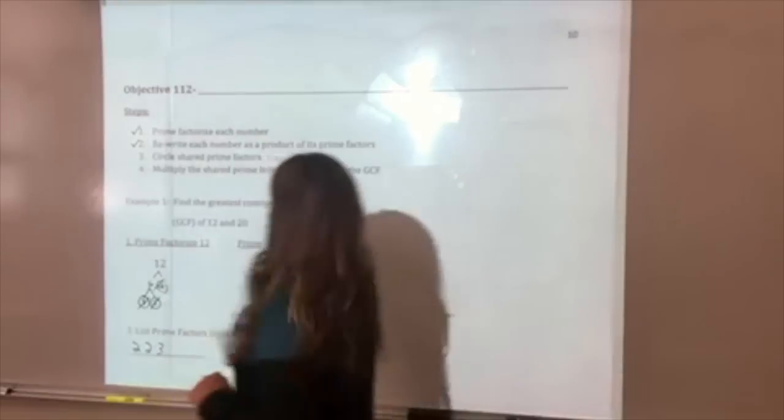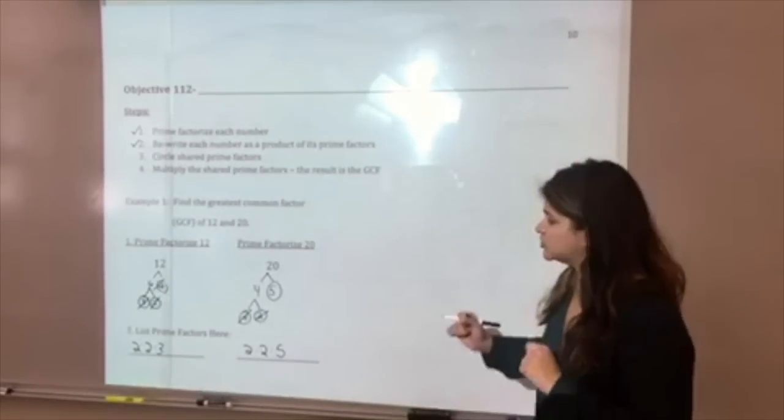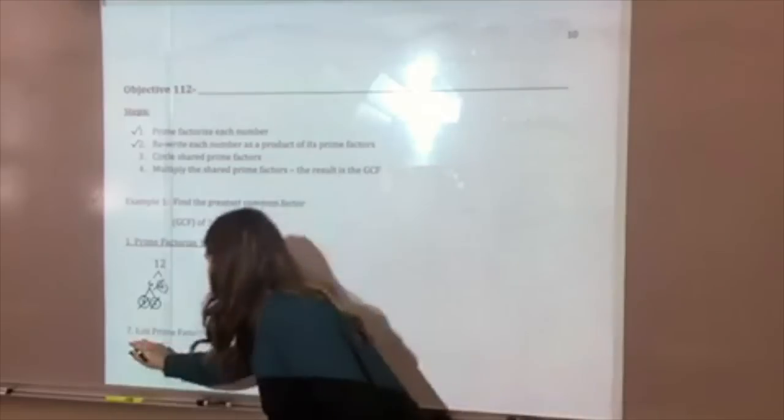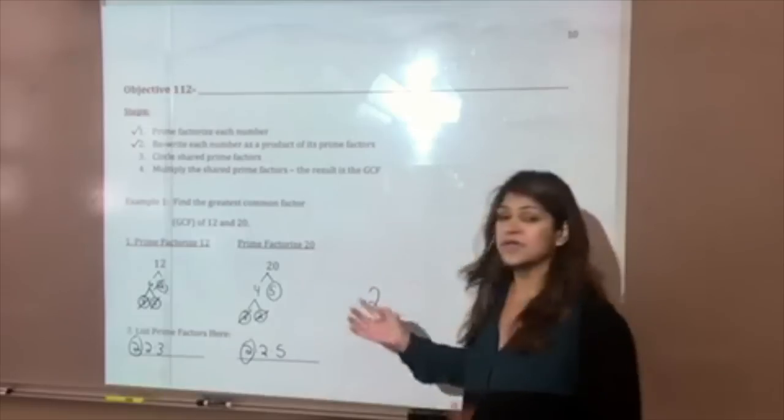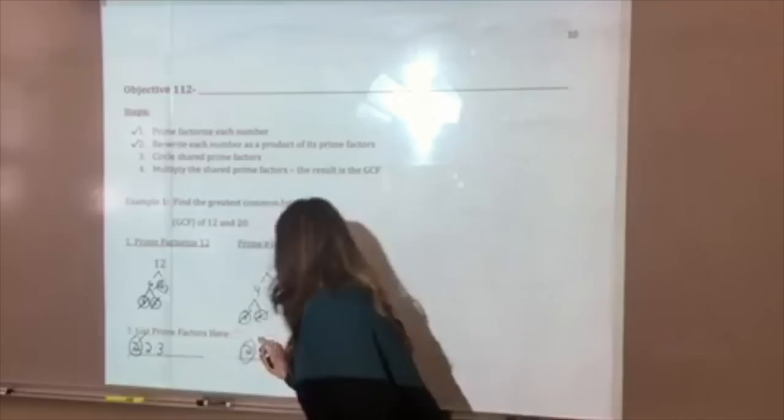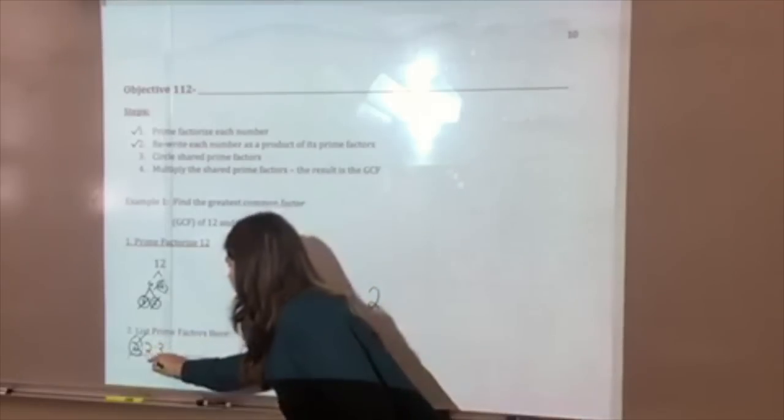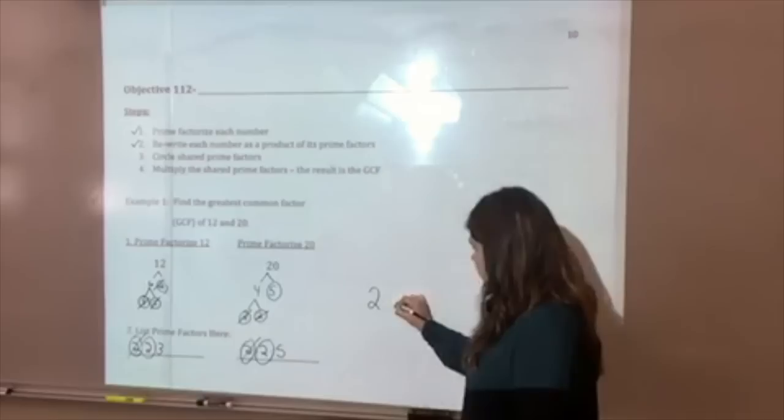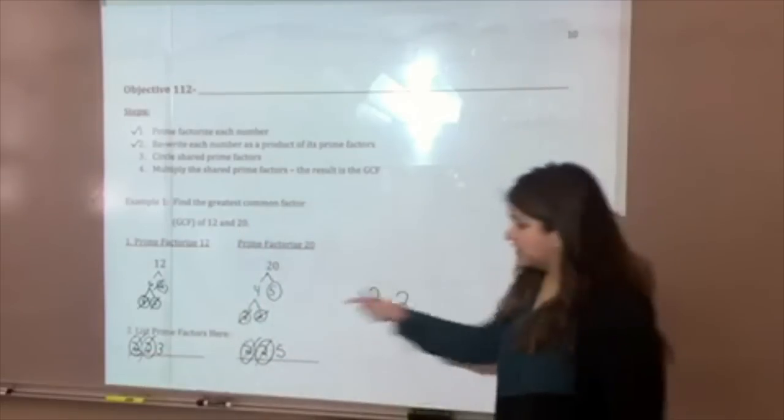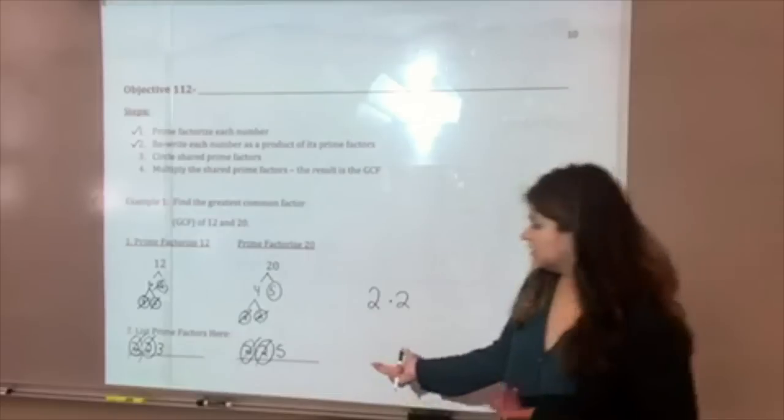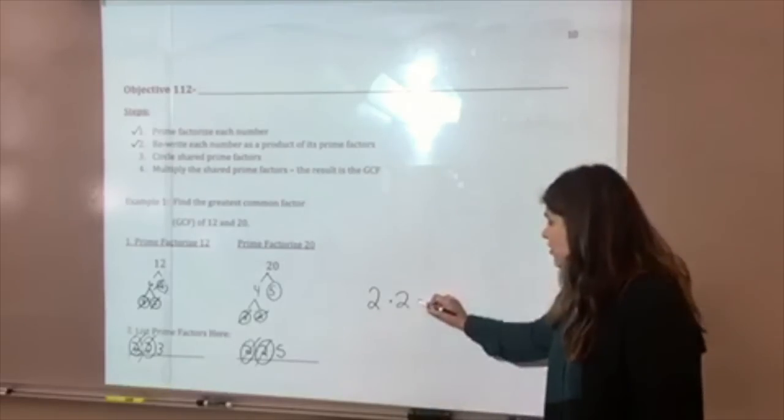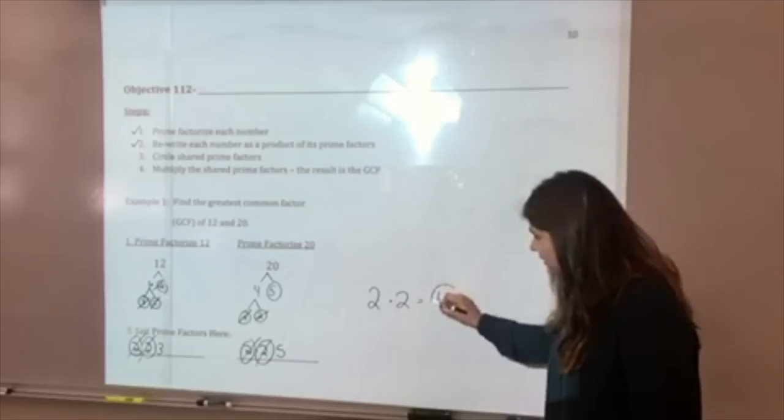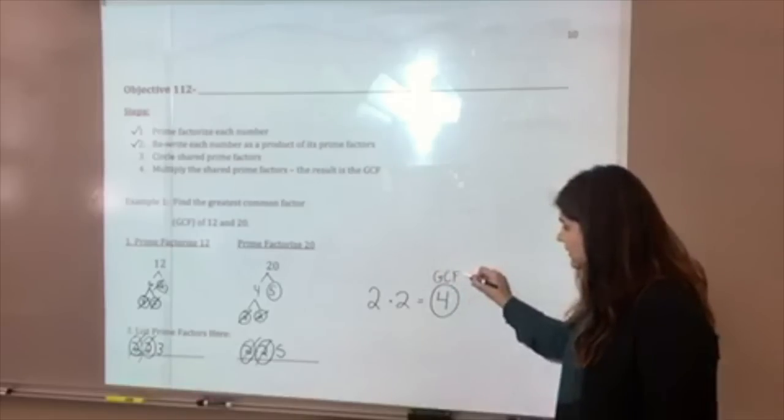Now we're going to circle the shared prime factors. Notice I'm not going to list them twice. So here I see a 2, here I also see a 2. So I'm going to simply pull out a 2, indicating that they both have a 2 that they share. They have another 2 that they share, so I'm going to go ahead and circle that and pull that out. Notice I'm putting multiplication here. I'm going to scan both of my lists and think, do I have any other shared factors? I don't. So these are the only 2 factors that they share.